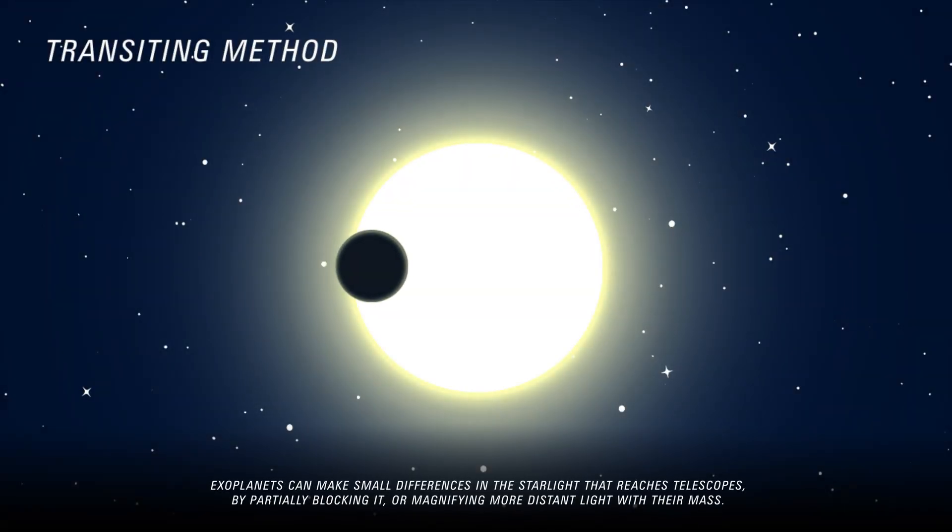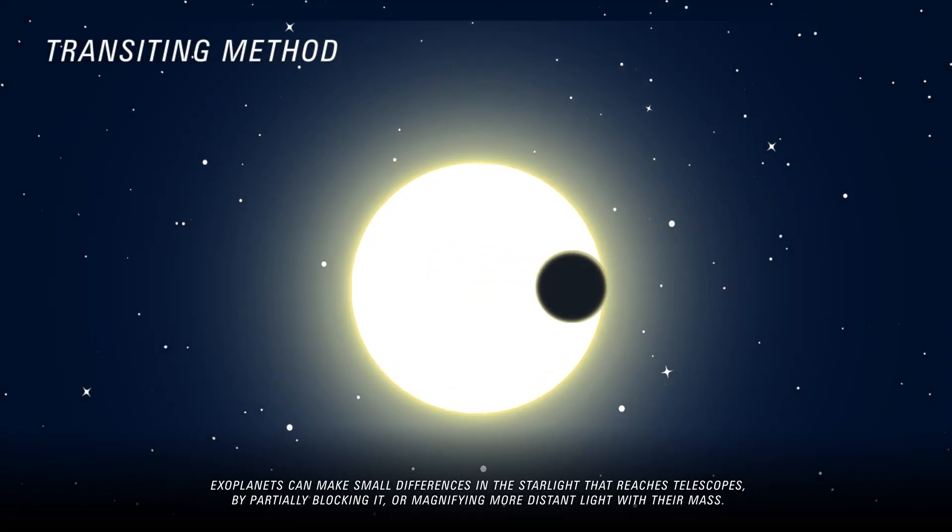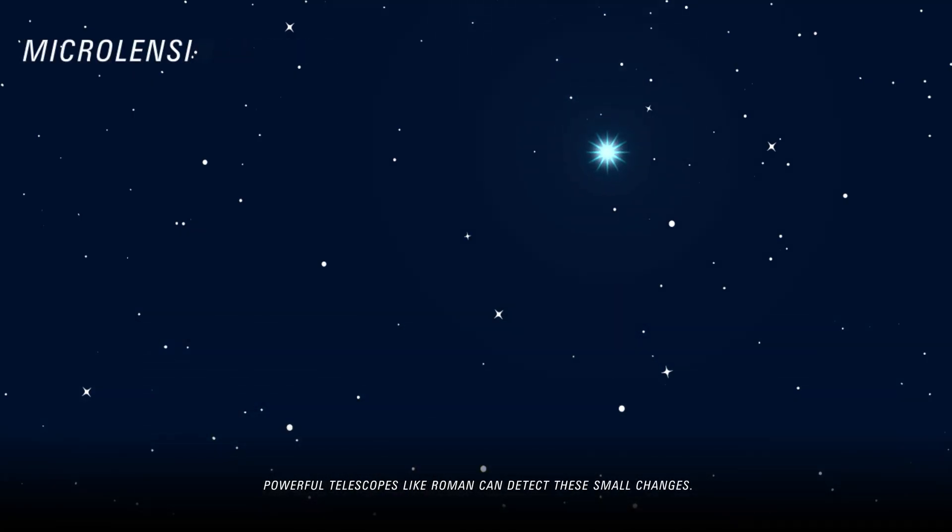Exoplanets can make small differences in the starlight that reaches telescopes by partially blocking it or magnifying more distant light with their mass. Powerful telescopes like Roman can detect these small changes.